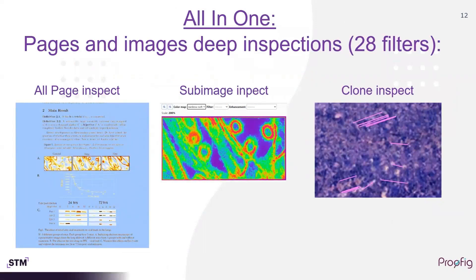We have now adapted Proofig for all-in-one inspection, and as far as we know, we are the only system that provides this. Users can now find duplications and investigate them more deeply using the same software, Proofig, removing the need for complicated Photoshop usage. This investigation can include an entire page or sub-image inspection, using our 28 filters to find instances of cut-and-paste issues, deletion manipulations, and clone inspection checks — all of which are easy to perform using Proofig.